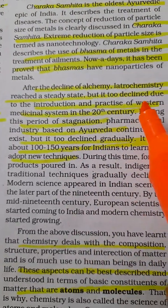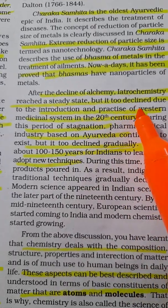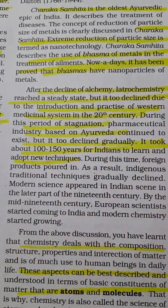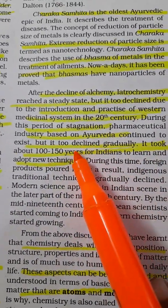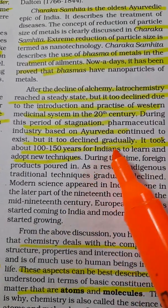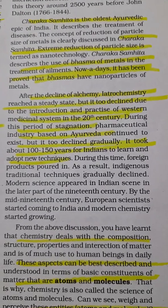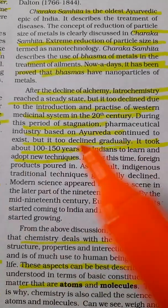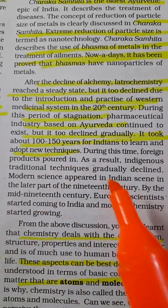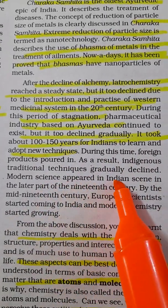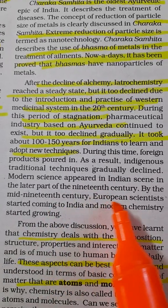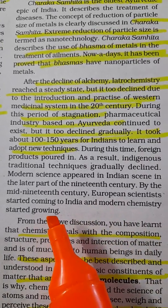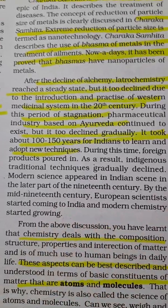After the decline of alchemy, lateral chemistry reached a steady state, but it too declined due to the introduction and practice of the western medical system in the 20th century. The pharmaceutical industry based on Ayurveda continued but also gradually declined. It took 100 to 150 years for Indians to adopt new techniques, foreign products came in large scale, traditional techniques declined, and modern science appeared in the Indian scene in the later part of the 19th century, with European scientists coming to India and modern chemistry beginning to grow.